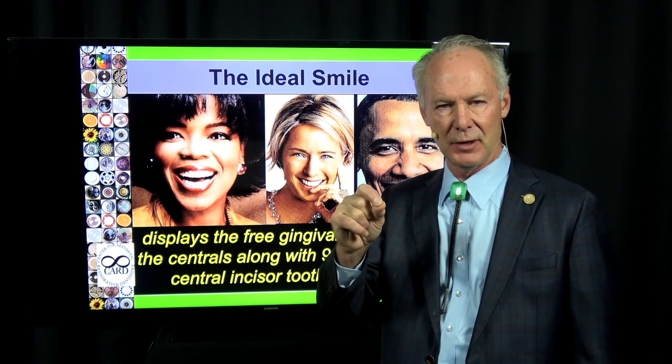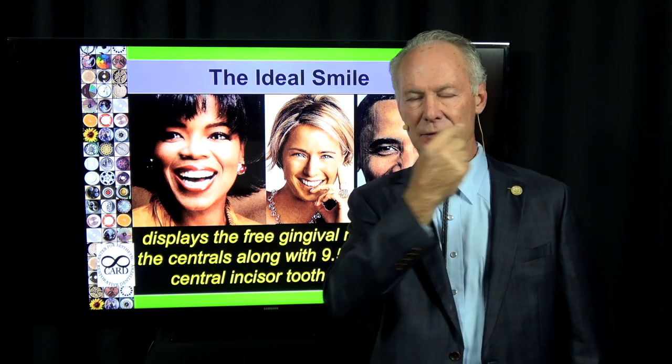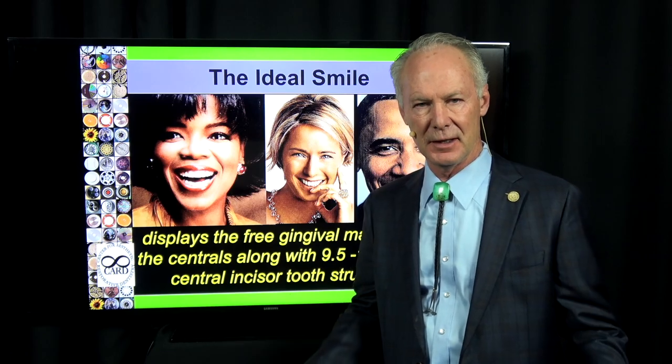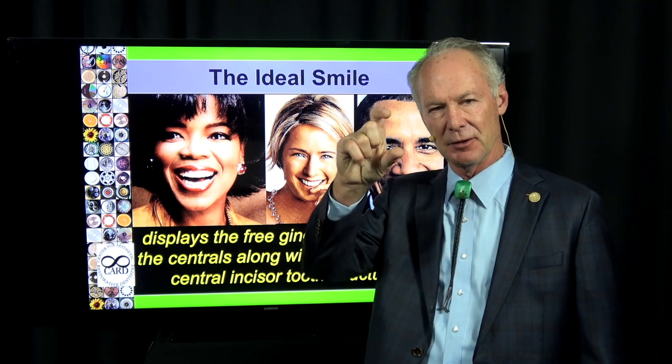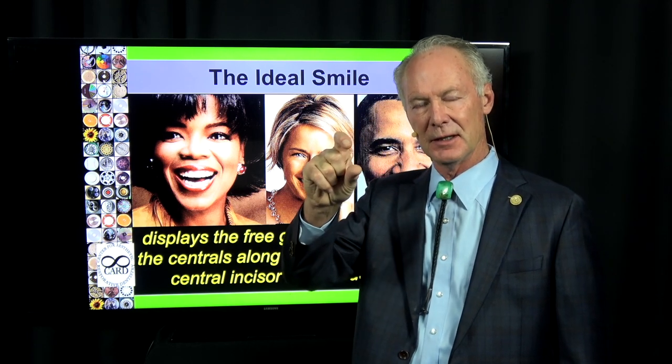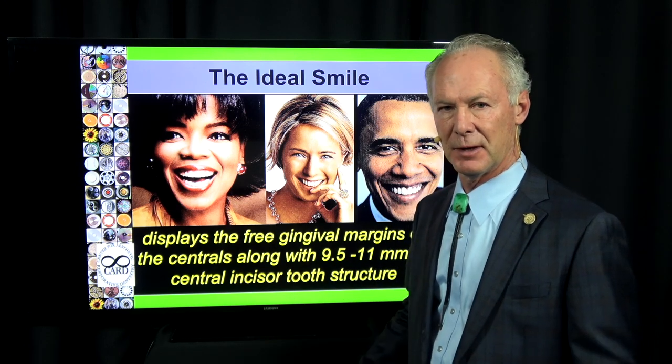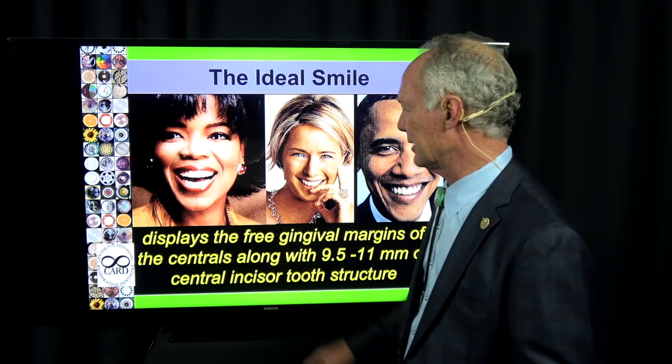If after crown lengthening the teeth are 10 to 12 millimeters long and there's still a significantly gummy smile, you're talking about orthognathic surgery — an ostectomy to remove part of the palate. I would not recommend that; the result is often not very aesthetic. Gingival display is not an aesthetic problem as long as the teeth are not tiny. Try to achieve a tooth length of 10 to 12 millimeters and live with the extra gingival display.